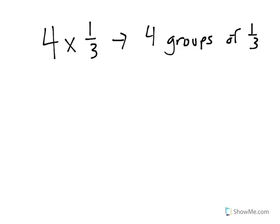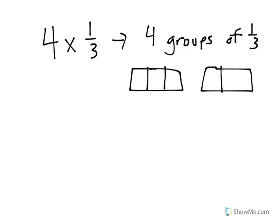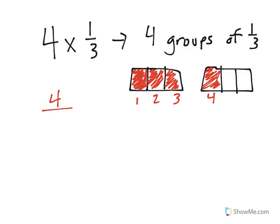When I represent that together — 4 groups of 1 third — I would have a shape broken into thirds. I'll break another one into thirds as well, and I would have 4 groups of 1 third each. Here's my first group of 1 third — you can see it takes up 1 third. There's one group, my second group of 1 third, my third group of 1 third, and my fourth group of 1 third. When I have all of that, what I end up with is a total of 4 thirds. There are 4 pieces shaded, each shape is broken into 3 equal pieces, making it 4 thirds.